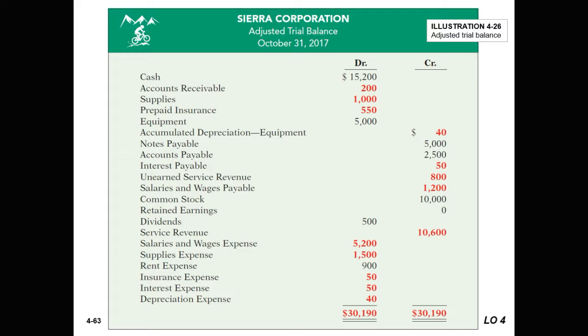For example, if we had increased supplies rather than decreased it, instead of seeing $1,000 in supplies, we would have $4,000. We'd know that's not right, and then we would go back.